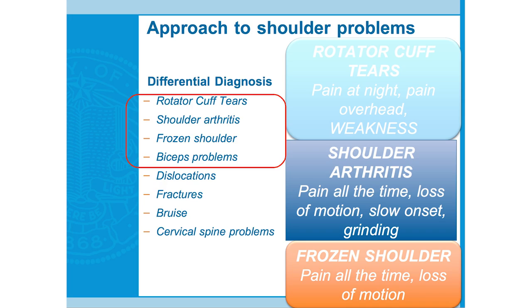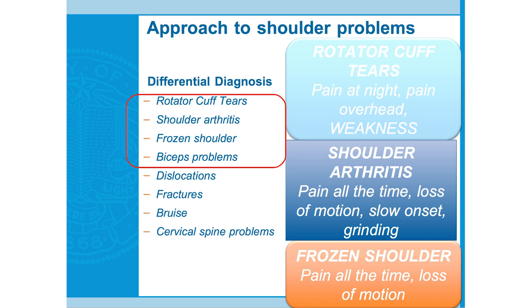There are a lot of red herrings — zebras at the bottom — that you have to think about. Cervical spine issues can present as shoulder pain quite frequently; patients think it's a shoulder issue and it's actually referred from the cervical spine. On the right, I've listed brief bullet points of what patients will complain of with the more common problems. For rotator cuff: pain at night, pain with overhead activities, and weakness. Shoulder OA: pain all the time, loss of motion, slow onset over years, and grinding. Frozen shoulder: faster onset, substantial loss of motion.